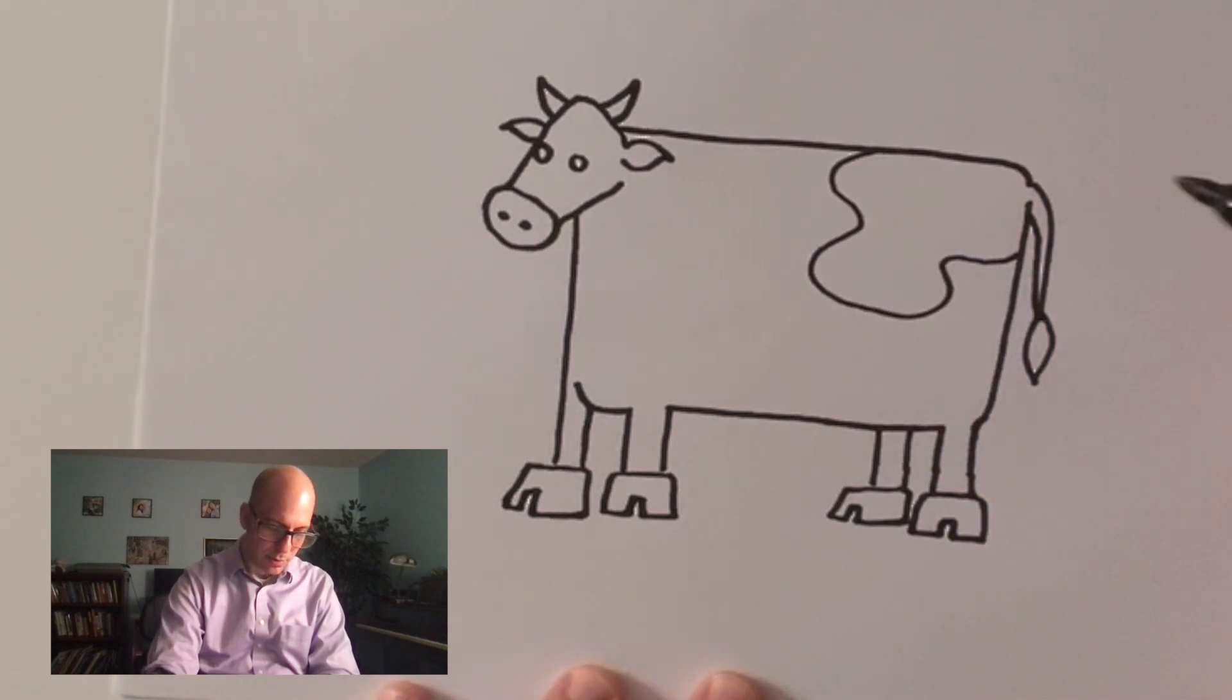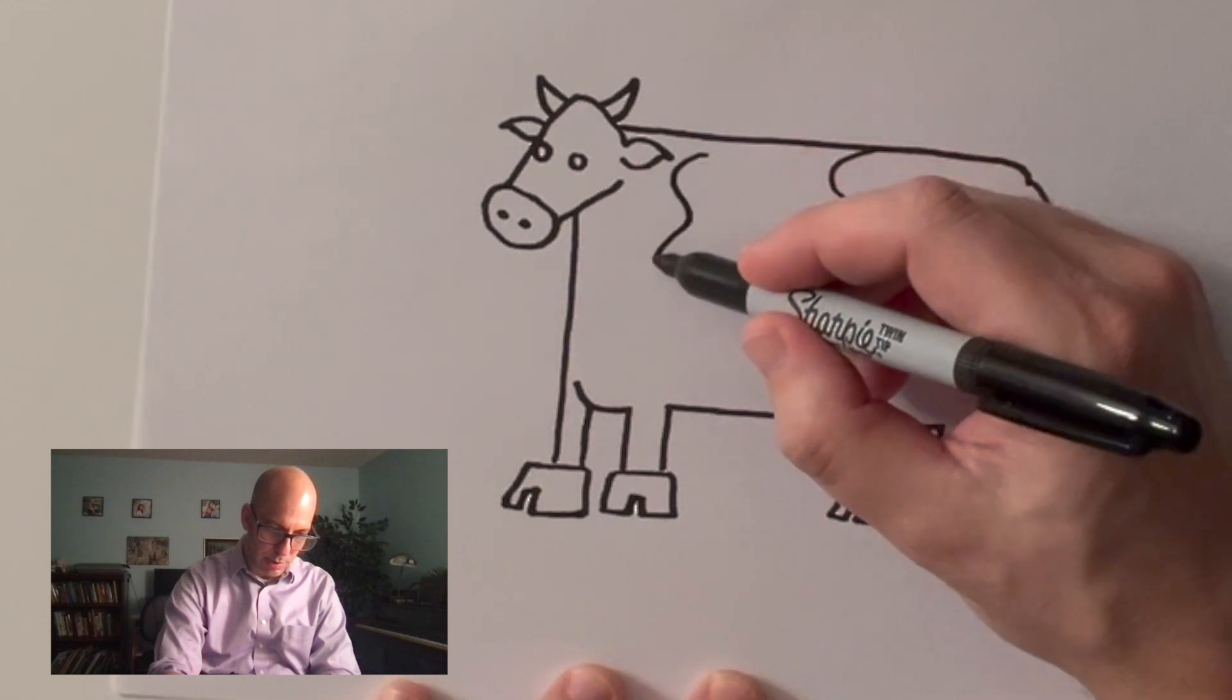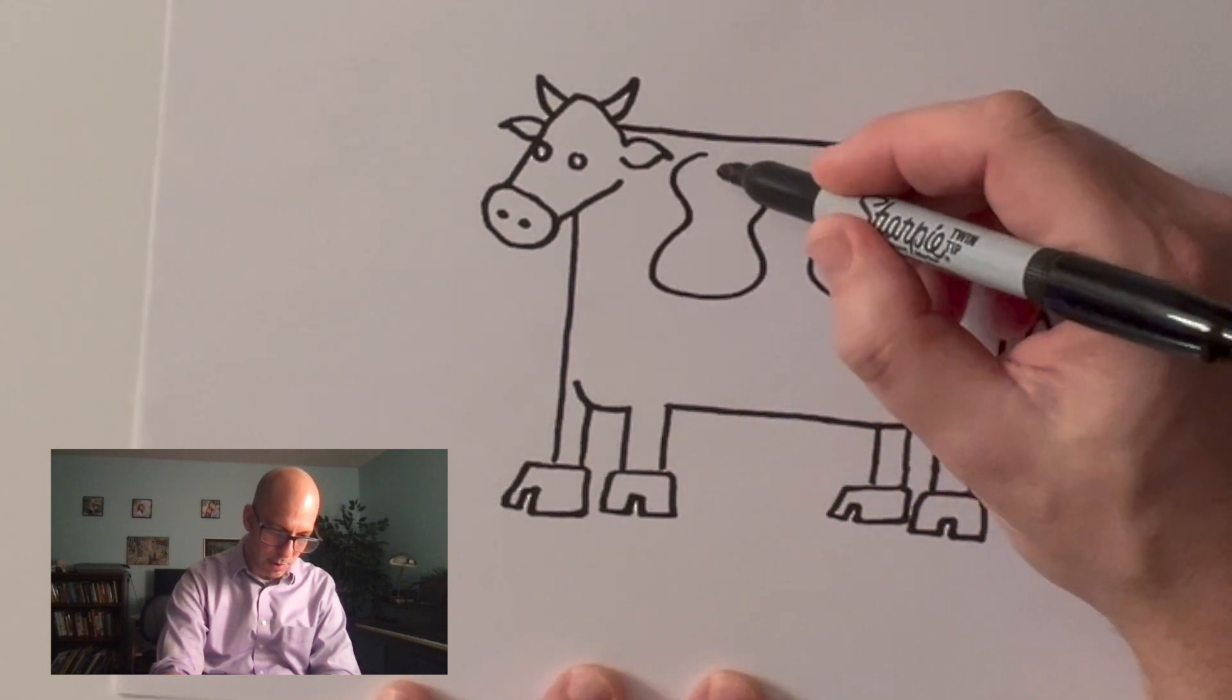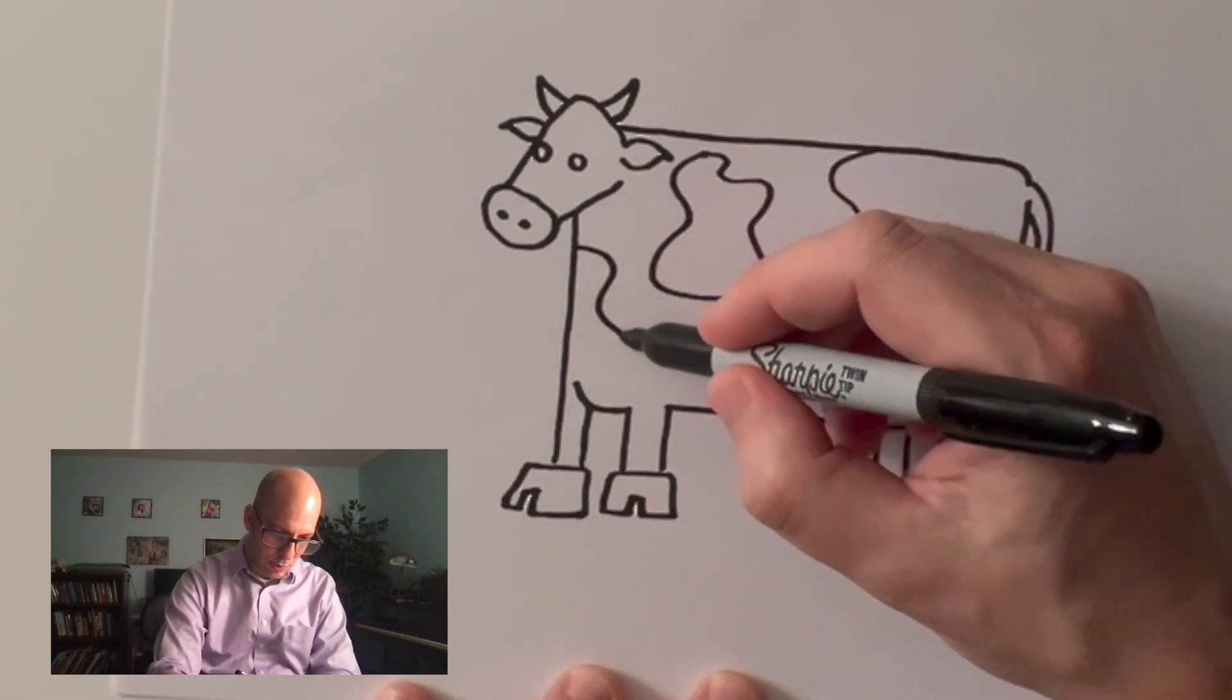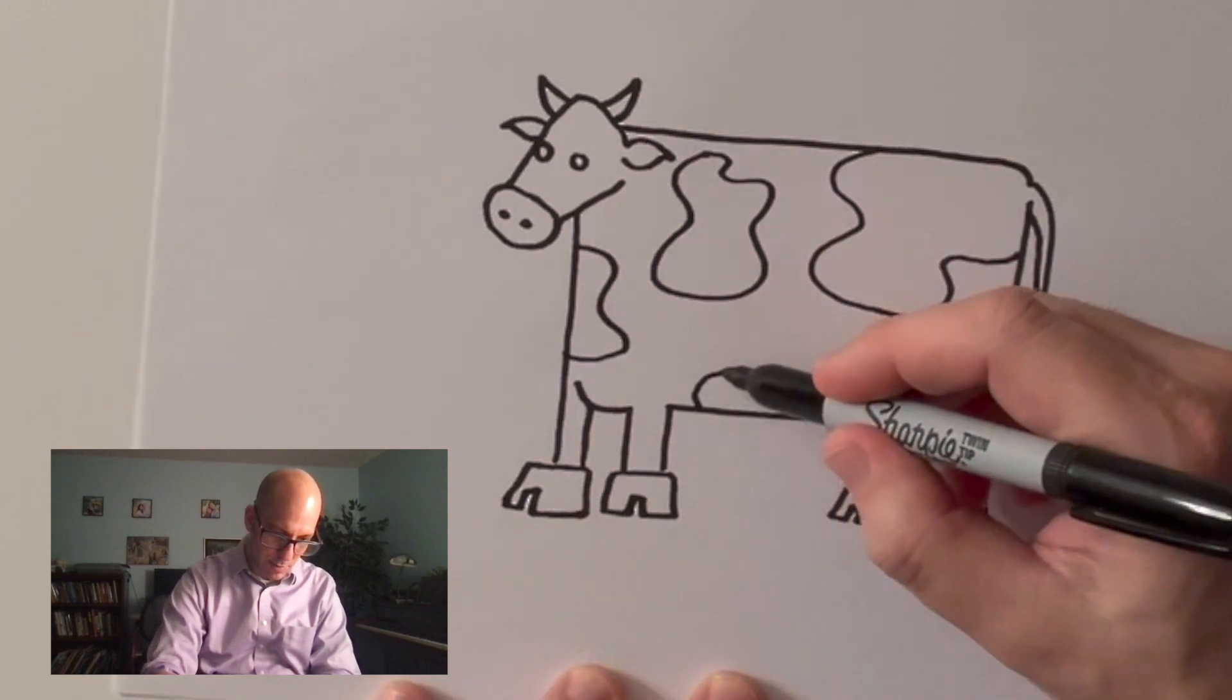Not all cows are black and white, but lots of cartoon cows tend to be black and white. You just find some patches here and there to make.